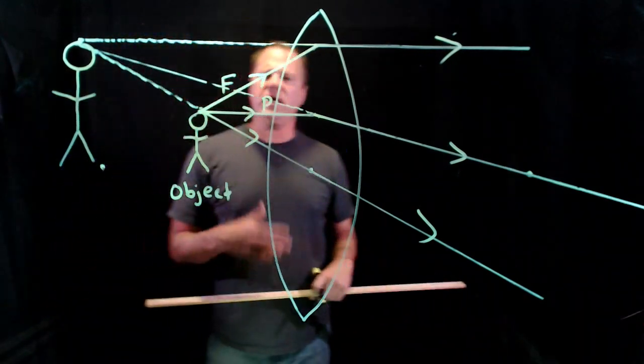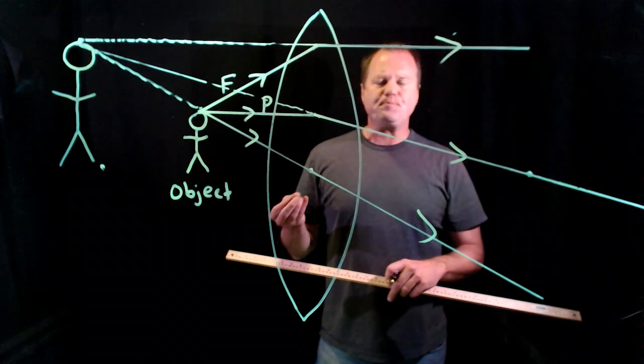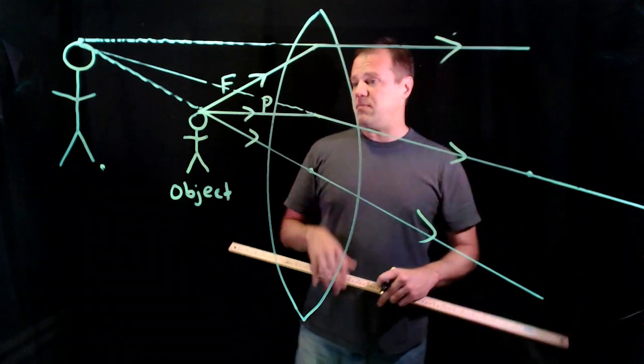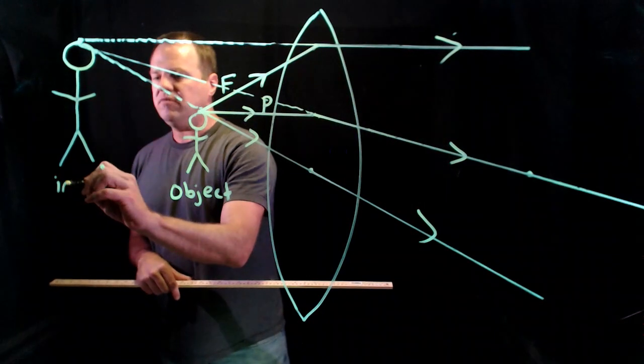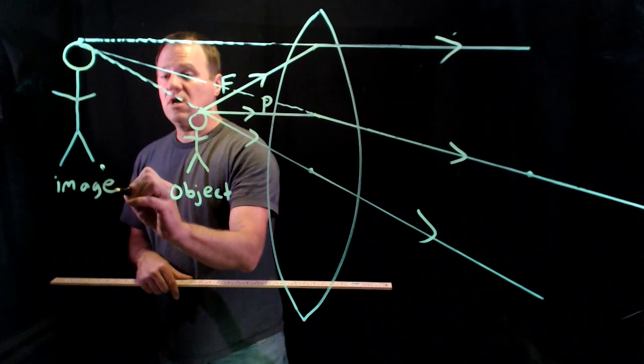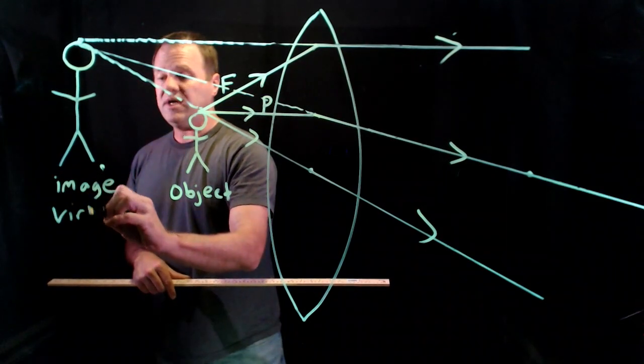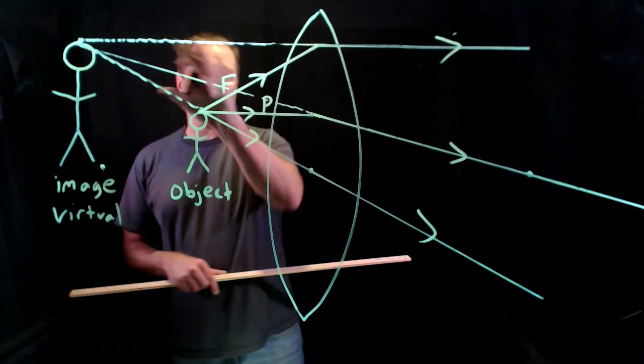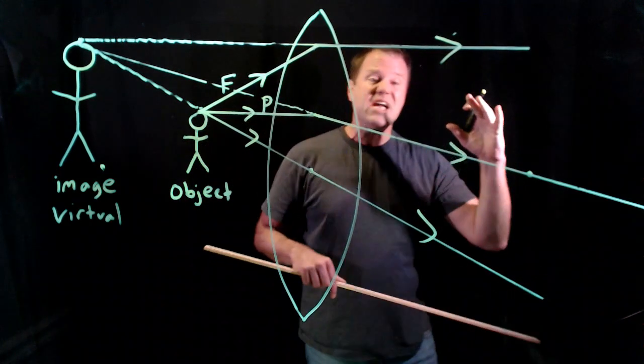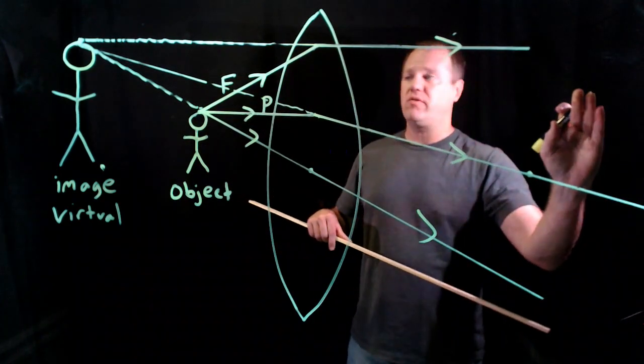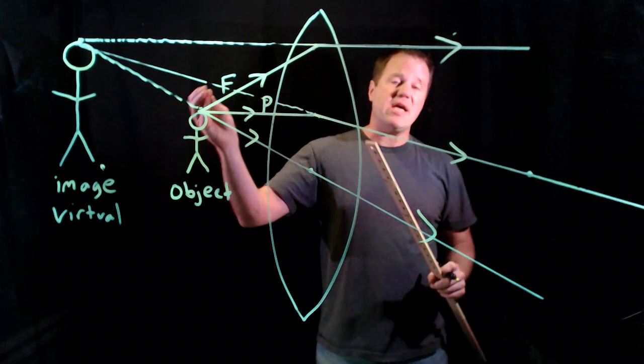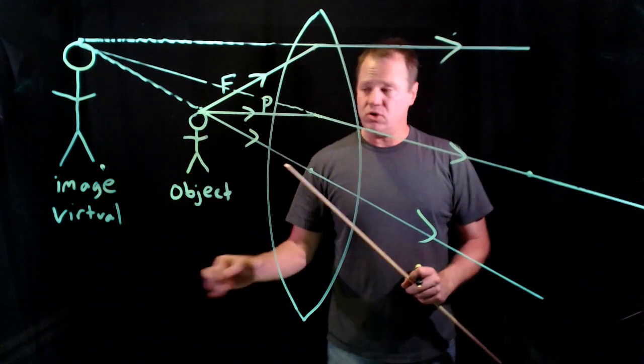And so what can I say about this image? So here's our image. We've located it. It is virtual because I have dotted lines going there where the light rays appear to have originated from to an observer over here rather than where the light rays actually converge. That makes it a virtual image.